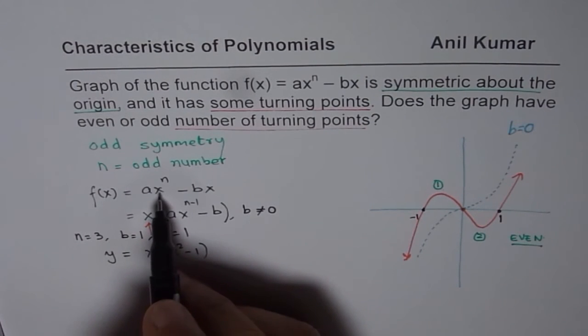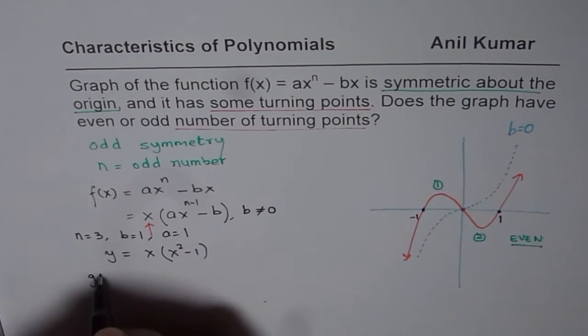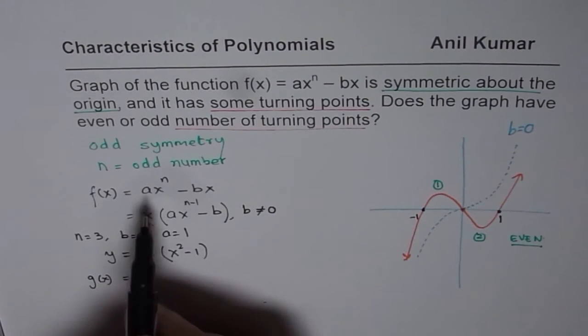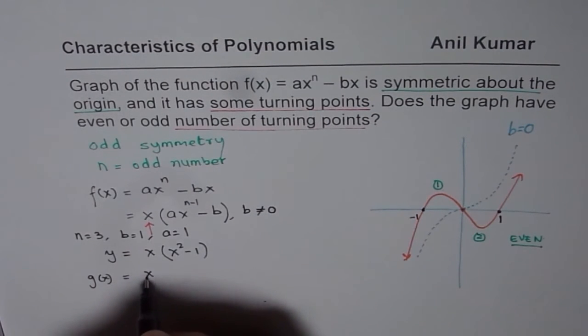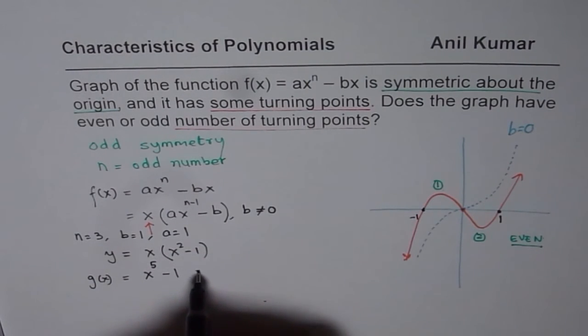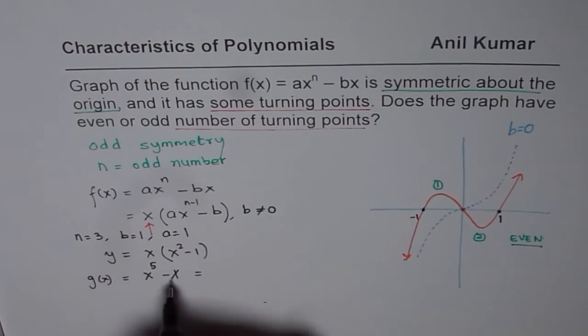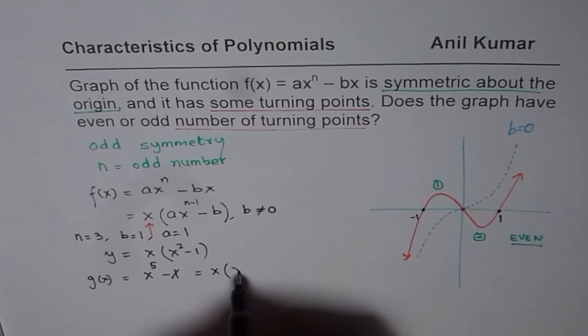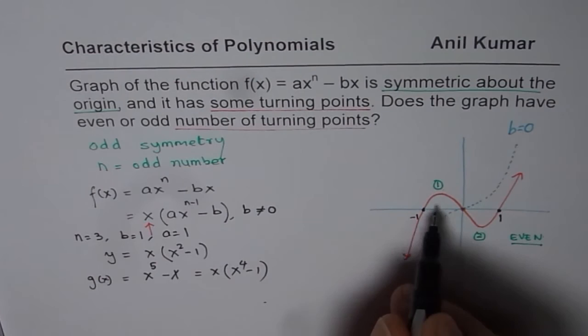Now if I increase the power of n to, let us say some other number, let us say 5, it has to be odd. n has to be odd number. So let me write down another function, let us say g of x. This time I will use this equation. We are using a as 1, b as 1. And we will write this function as x to the power of 5 minus x. We can factor out x, we get x(x to the power of 4 minus 1). And this one also gives us a similar graph.